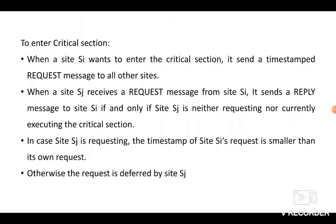To enter the critical section, if site SI wants to enter the critical section, first it sends a timestamped request message to all the other sites — that is, it is broadcasting a timestamped request message to all other sites. When the other site SJ receives the request message from site SI, immediately it sends a reply message to that site, if and only if site SJ is neither requesting nor currently executing the critical section. If SJ also wants to enter the critical section, the timestamp of SI's request must be minimum compared to its own request. Otherwise, the request is deferred by site SJ.